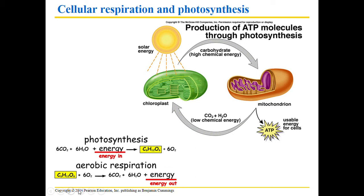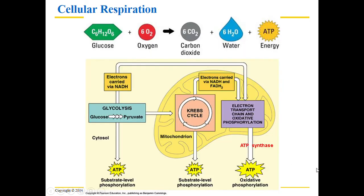The equations for photosynthesis and aerobic respiration are similar but flipped — the products of one are the reactants of the other. For cellular respiration: glucose plus oxygen (C6H12O6 + 6O2) equals carbon dioxide plus water plus energy (ATP). These are the reactants going in and the products coming out. Aerobic means with oxygen; without oxygen we call it anaerobic respiration.